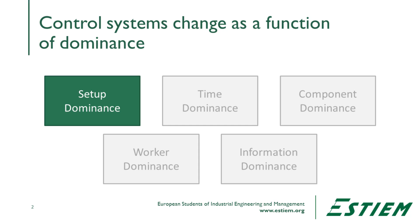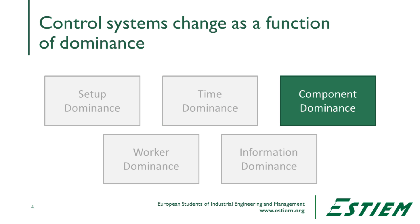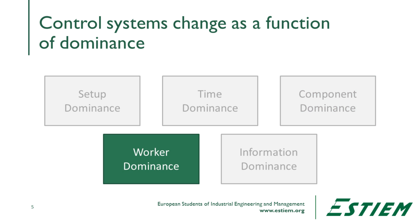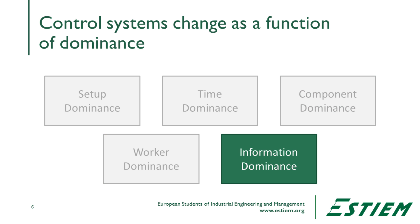In a physical process, we can see various types of dominance: setup time dominance, time dominance in terms of the process, component dominance in terms of the things going into it, worker dominance in terms of the work that's happening, or information dominance in terms of how we understand how the process should be put together. Each of those different types of processes has a different degree of control and a different approach to how we control it.